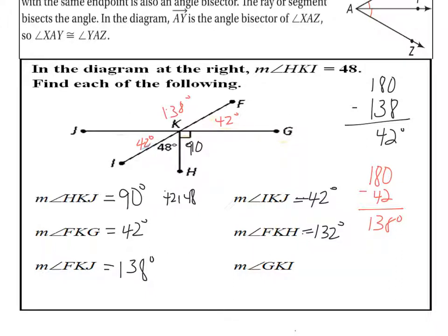And then G, K, I. Angle G to K to I. All right, so that's 90 and 48 together. That's going to be 138 degrees. 90 and 42. And F, K, H was 90 and... Man, see, I told you guys. Making all sorts of mistakes. All right, 90 and 48 for down here. That's 90 and 42 for that one. Okay.